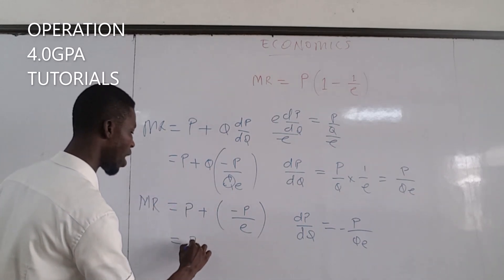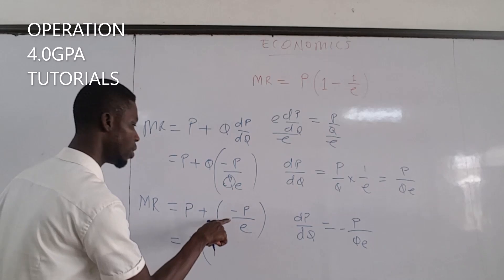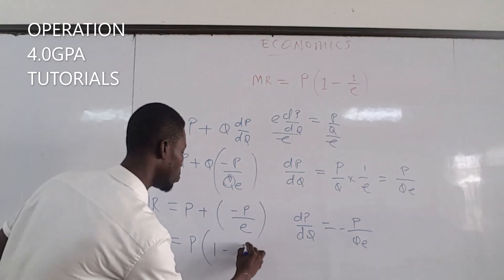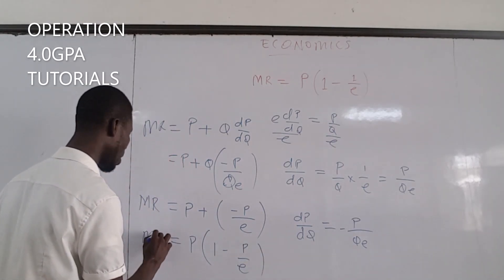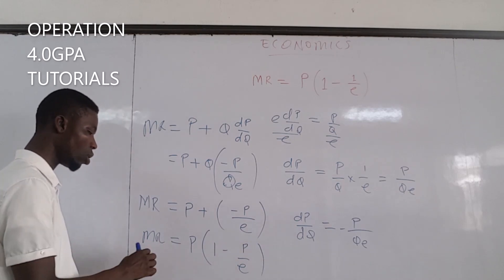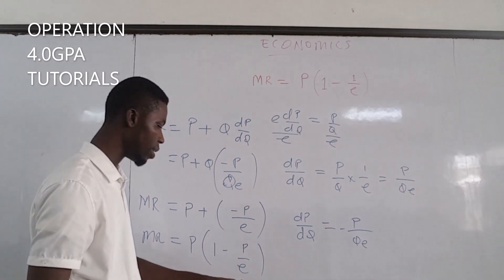We can factor the price out having 1 minus the minus sign minus P over E. So this is the mathematical way of proving the relationship between marginal revenue, price, and elasticity.